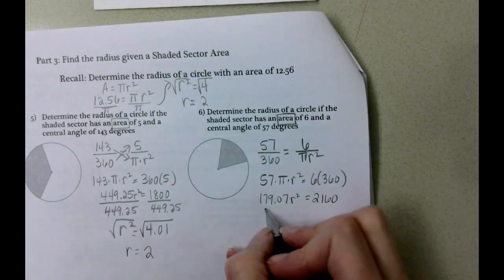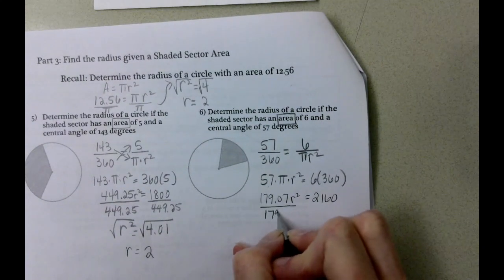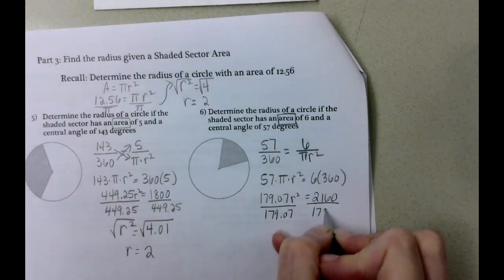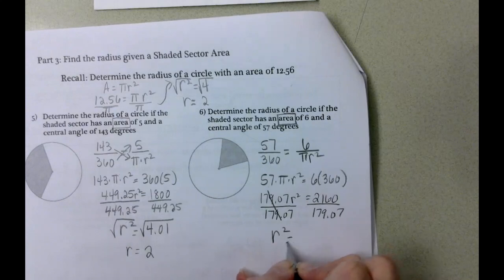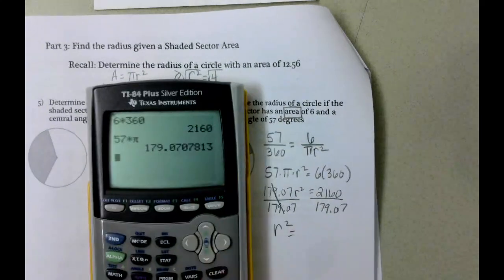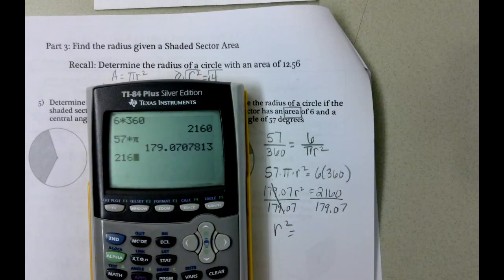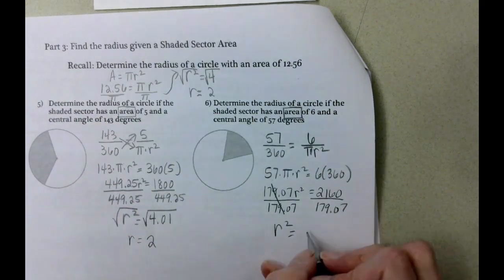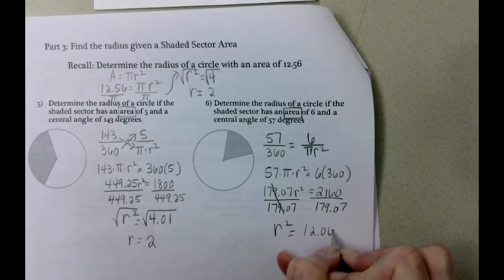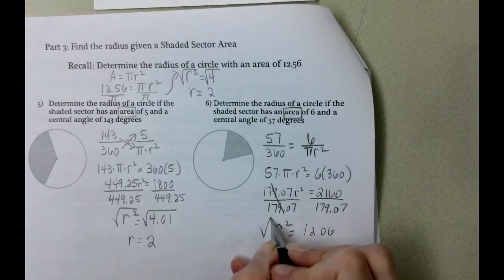So now we're in the divide. We get radius squared equals 2160 divided by 179.07. Then we get 12.06. And then we need to take the square root of both sides.